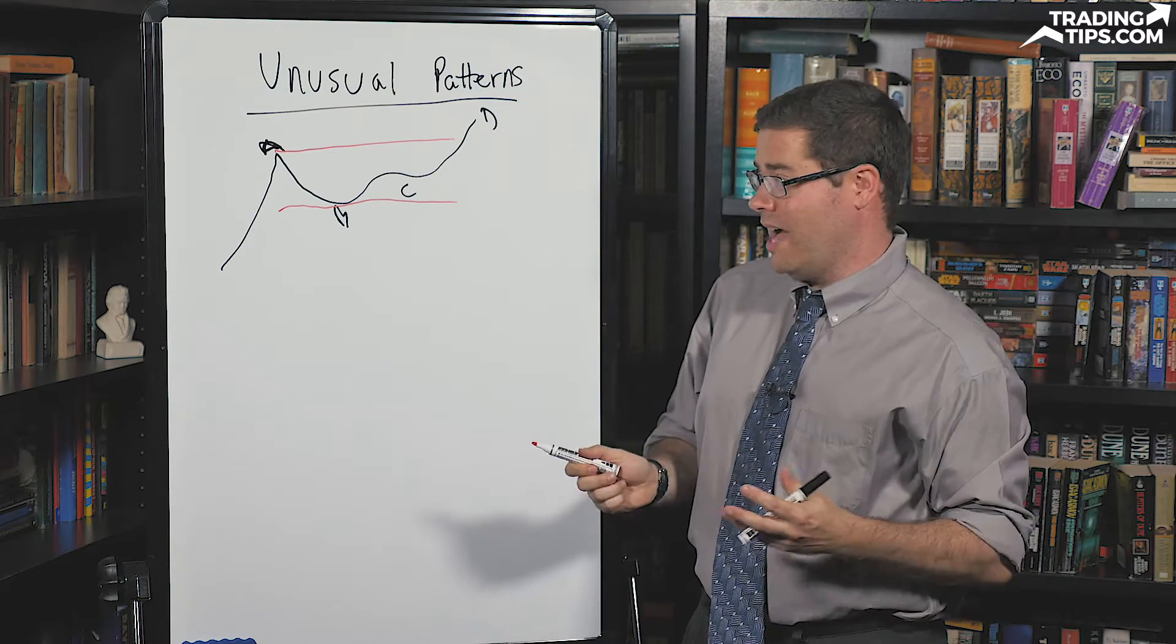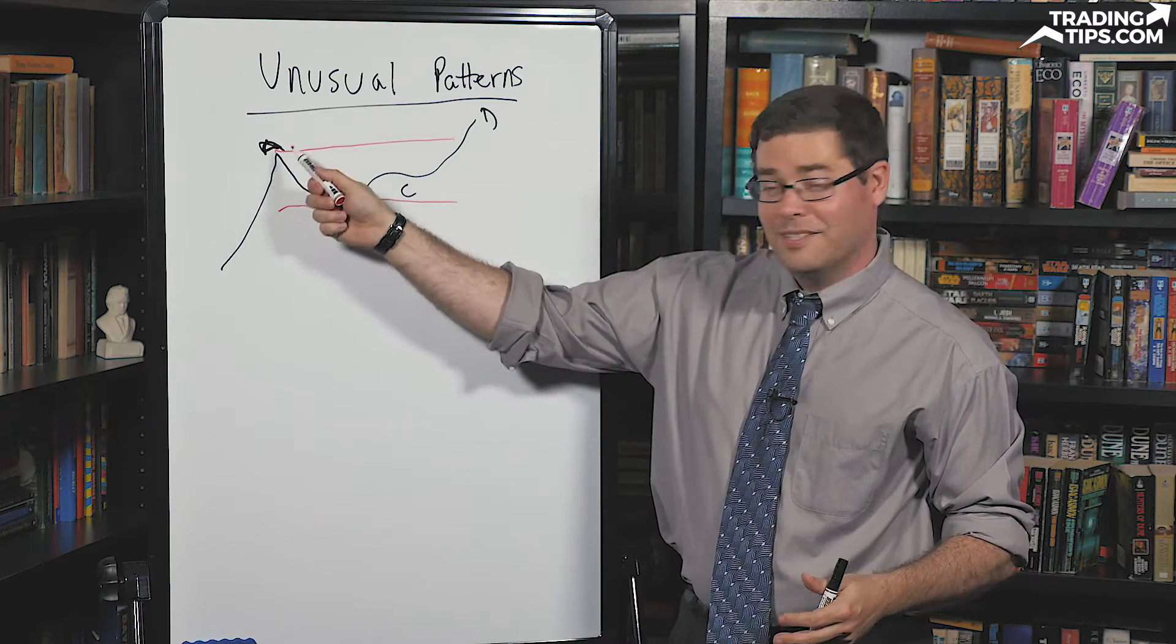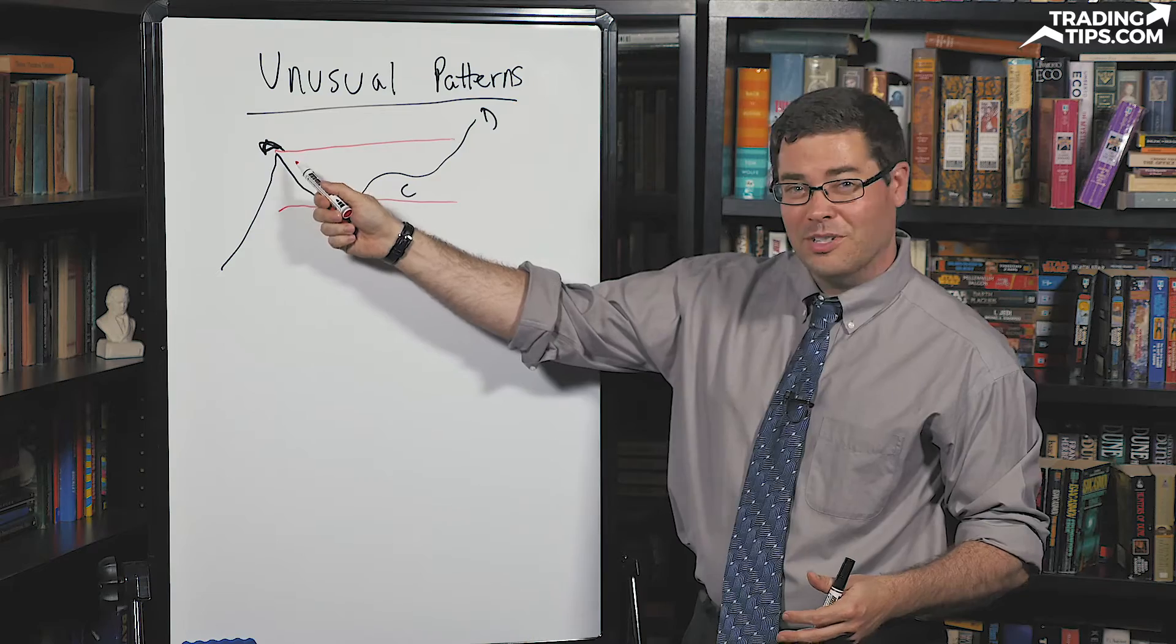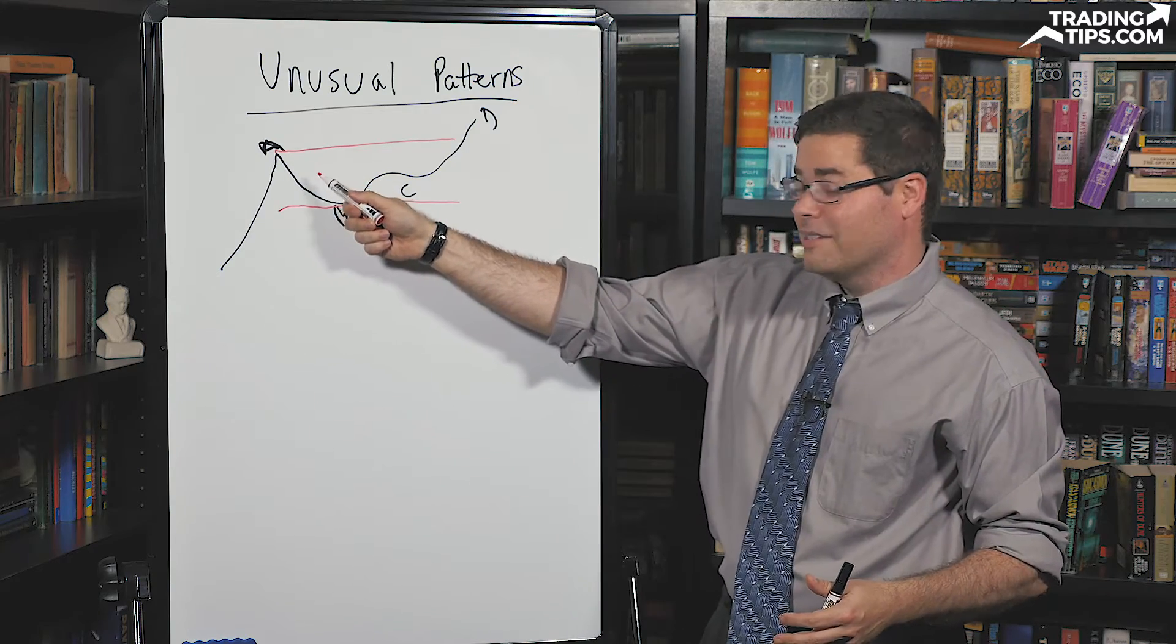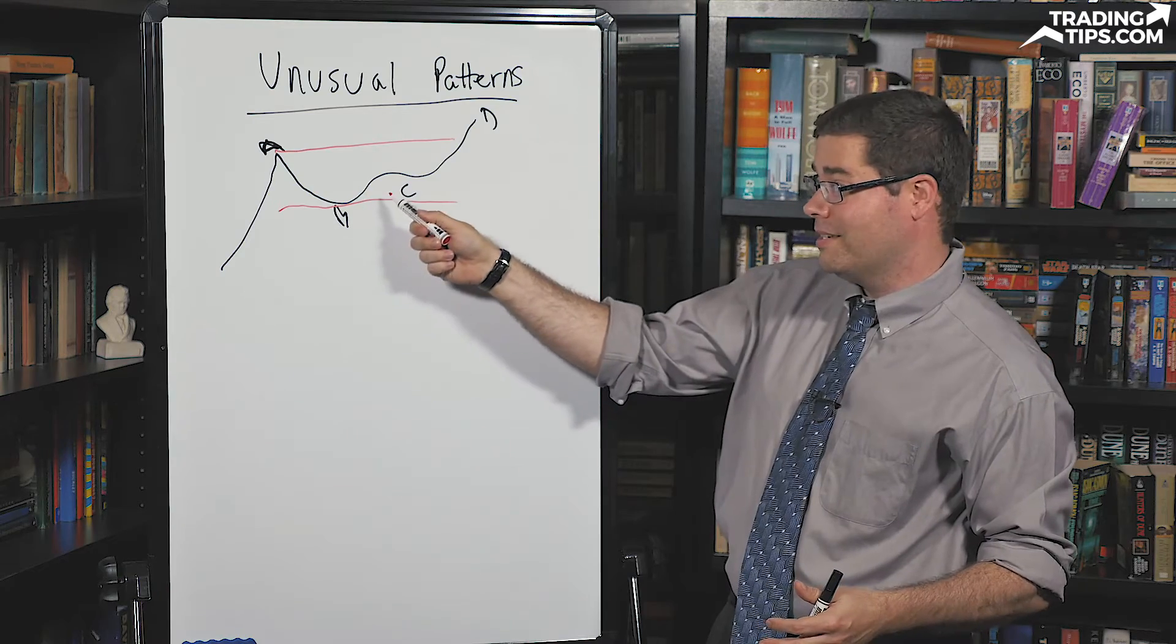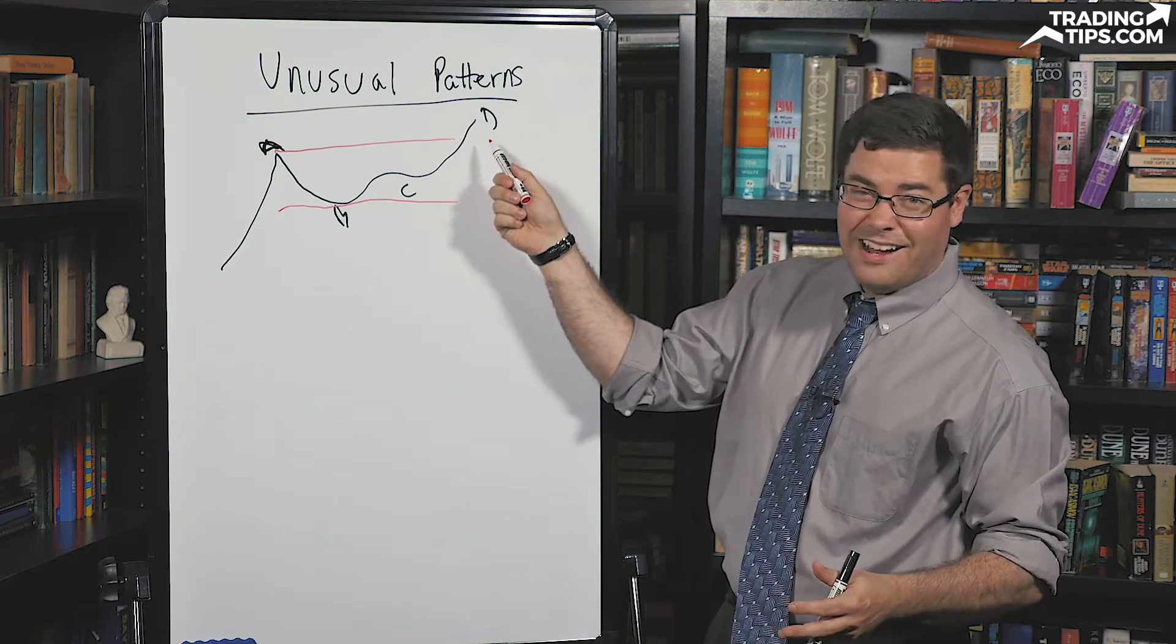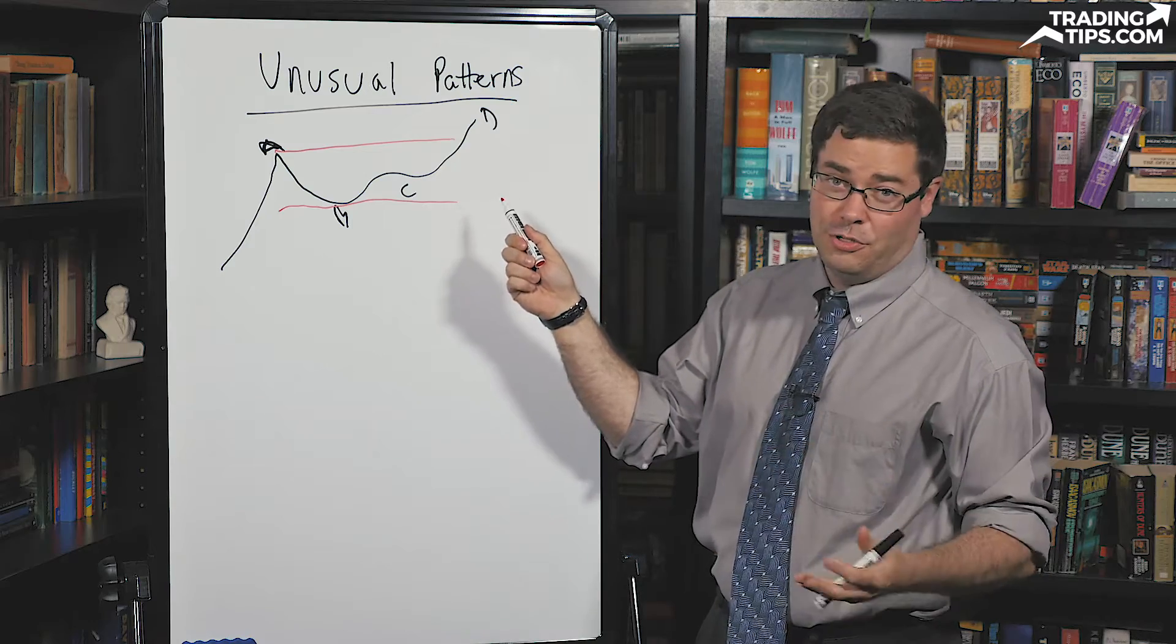Usually when I see this in a stock, you'll have some news before the market open, so at 9:30 you'll get this initial pop, and then around 10 a.m. or so you'll start to see things kind of give back some of the gains but not entirely, and then throughout the rest of the day it'll kind of trade in a bit of a range before eventually heading higher, usually in the last hour or two of trading.